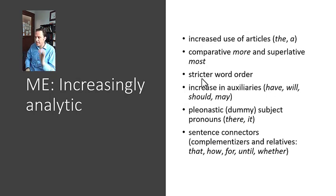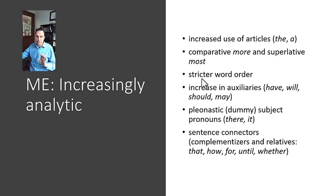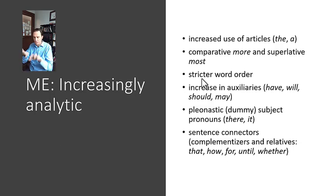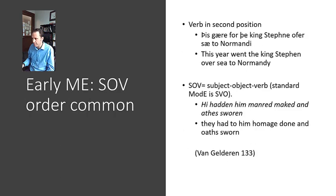The other thing that we see arise is sentence connectors — complementizers and relativizers — "that," "how," "for," "until," "whether" — all things that link one sentence to another. "I know that you are cool," "I know how you are cool," "I have known this a long time for you have been cool to me for a long time," "I will continue to be your friend until you stop being cool," "I would like you whether you were cool or not." All of these connect two different sentences, and we get more of these connecting words. Whereas in Old English, you had very few — you had like "þa" and "þonne."